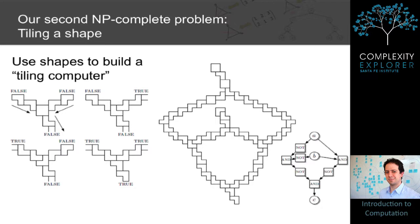The idea of showing that this is NP-complete is that we can use these shapes to build a tiling computer. For example, we can simulate an AND gate by using the shape you see here. What you see here is we're treating the upper two ends of this shape as the inputs to a gate, and the bottom end as the output.